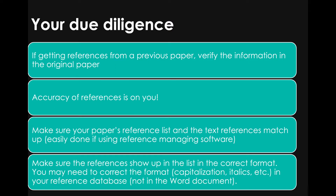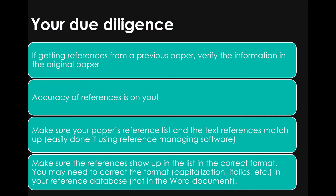When you are citing sources, make sure you do your due diligence. You need to verify the information in those references, especially if you're getting the references from a previous paper. If you're making the same point that a previous paper is making and you cite the same references, that's fine — but you need to verify that those previous authors got it correct. Go into those papers you're going to cite and make sure they say what you think they say. Read them, or at least read them enough to verify the information, because the accuracy of the references is your responsibility as the author.